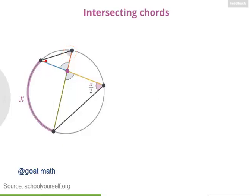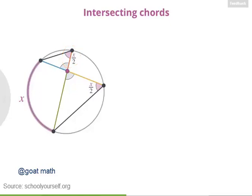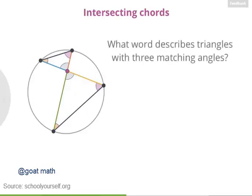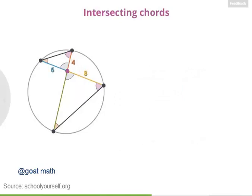Now if you look up here, we have another inscribed angle for this same arc, so this angle also has measure x over 2. We may not know the exact value of x, but these two angles have the same measure, so they're congruent. Similarly, the arc over here is inscribed by this angle down here and also by this angle up here, so these two angles are also congruent. So these two triangles have three matching pairs of angles — meaning they are similar.